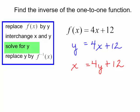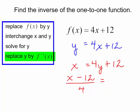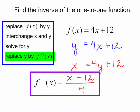And now we will solve for y. Subtract 12 from both sides. And then divide by 4. And that is what I get when I solve for y. But remember, this is our new y. This is our inverse. This is f inverse of x.